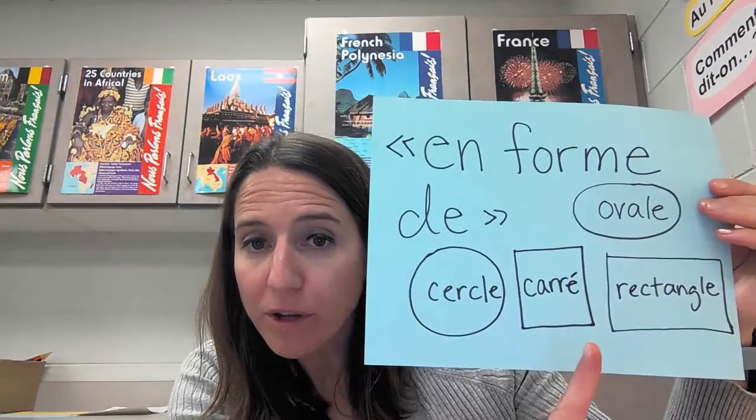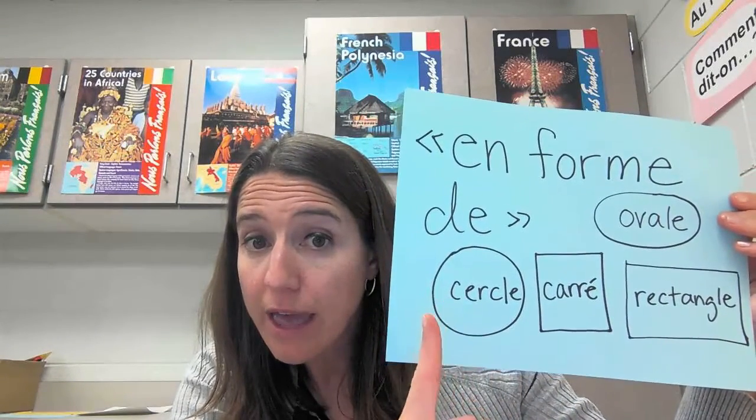Il y a un grand monstre vert qui s'appelle Ham — like the lunch meat, ham. Ham est en forme de cercle. Il a deux bras et trois jambes. You're going to need to pause this to do the drawing, or you can jot it down and do the whole drawing afterward — it's up to you. Il a deux bras et trois jambes.